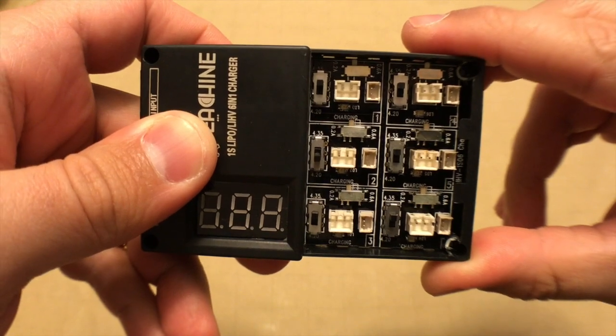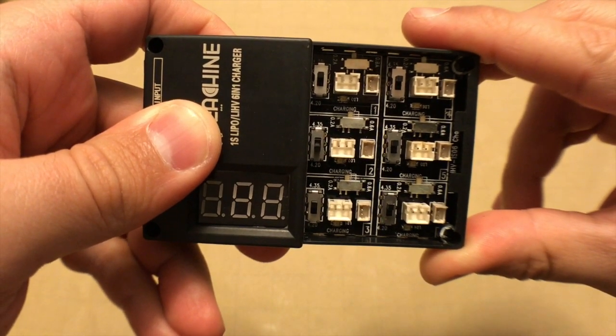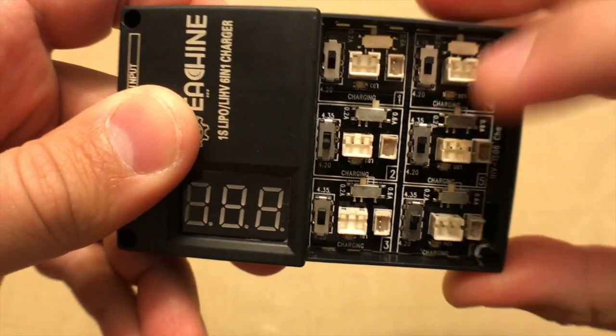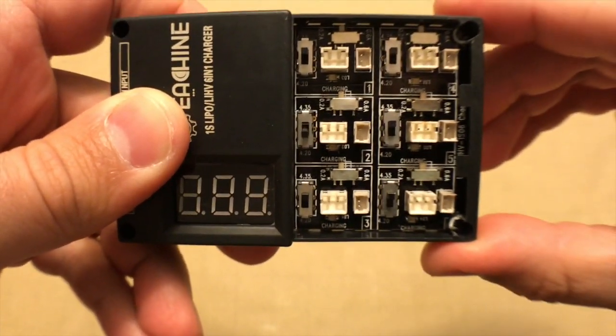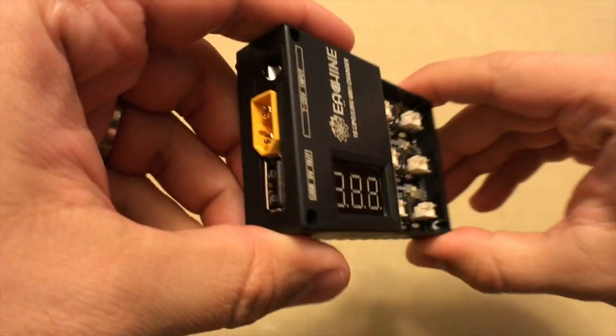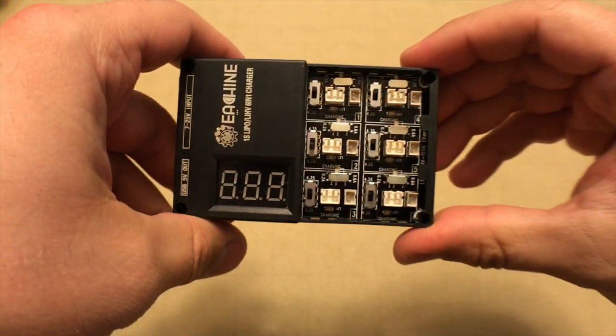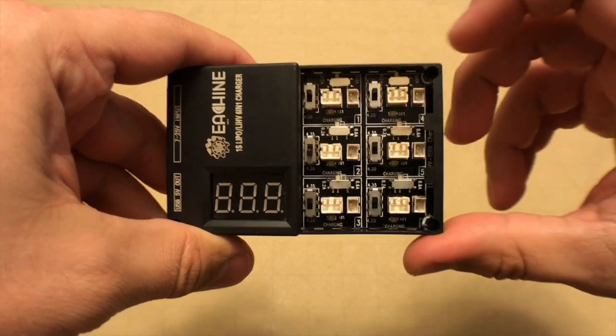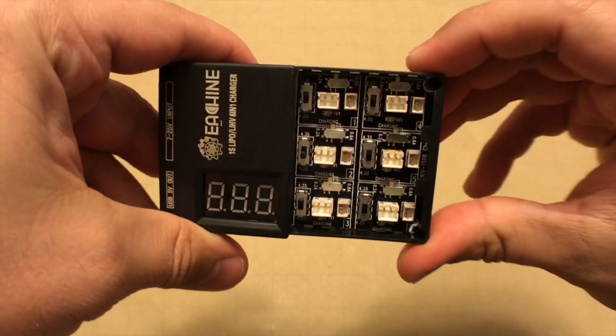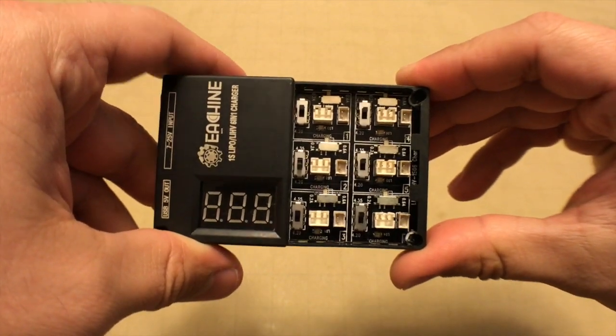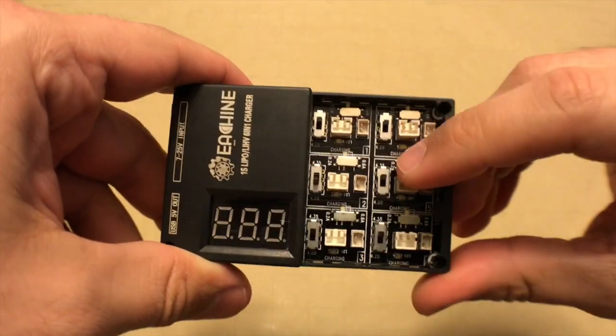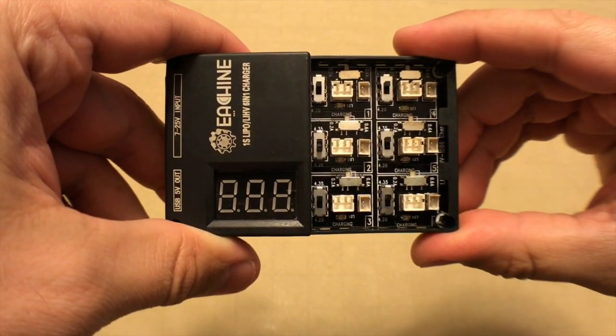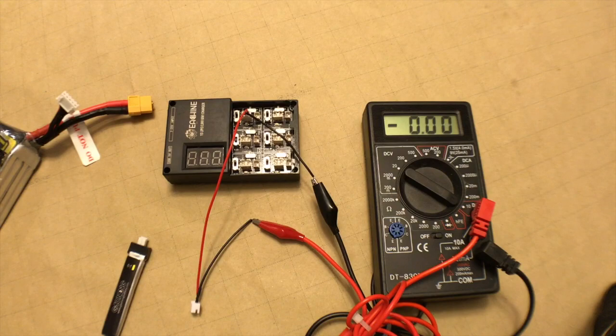It also has two settings for the current output. This switch right here switches between 0.2 and 0.6 amps. So this one does have more features than some of the other ones, but what we're going to take a look at next is the final output voltage for each of these to see if it actually gets up to 4.35 volts, and then we're also going to see what the output current is for both of these settings to see if it's what they advertise.